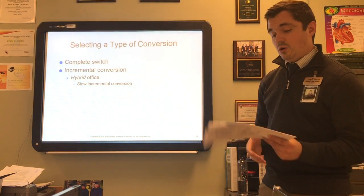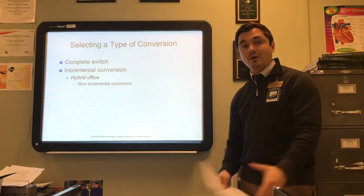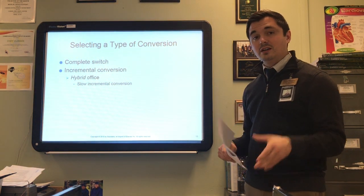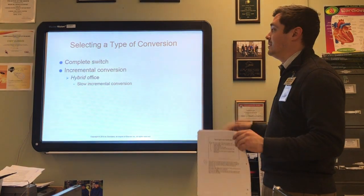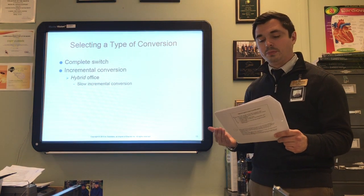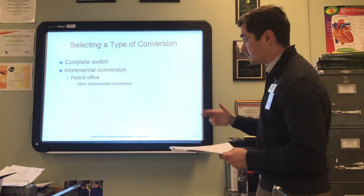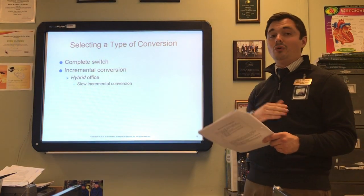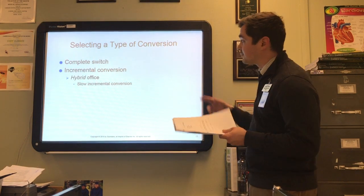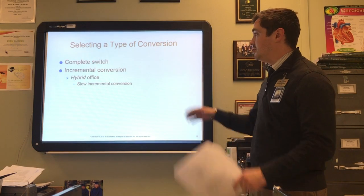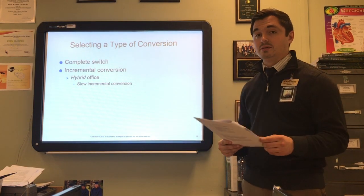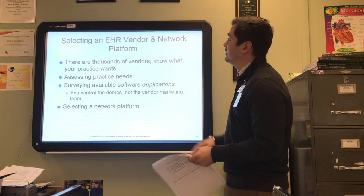When converting from paper to electronic medical records, you need to select the type of conversion to implement. Options include a complete switch — scanning all old paper records into electronic health records — or an incremental switch such as a hybrid office, where existing patient charts are kept on paper and only new patients are entered into the electronic database. There is also a modified hybrid approach where new patients are in the EHR system while old patients are gradually converted until there are no more paper records.